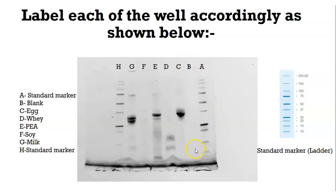Then we have Well B. In most cases when we run SDS-PAGE, we usually leave Well B — the second well — blank. That's mainly to avoid any forms of contamination, or where the marker leaks through into the rest of the samples if you haven't been so careful. That can result in false bands that don't necessarily belong to your sample. And then we have Well C.